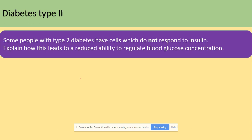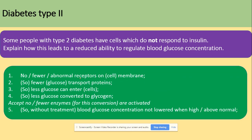For type 2 diabetes, some people have cells that do not respond to insulin due to faulty proteins. If they have abnormal receptors on the cell surface membrane of liver cells, there will be fewer glucose transport proteins, so less glucose can enter the liver cell and less glucose can be converted into glycogen for storage. Hence blood glucose concentration will not be able to decrease.